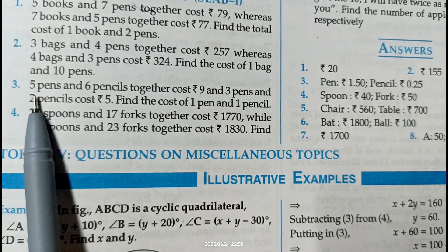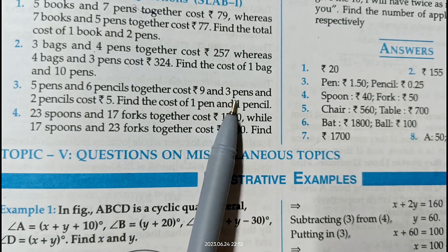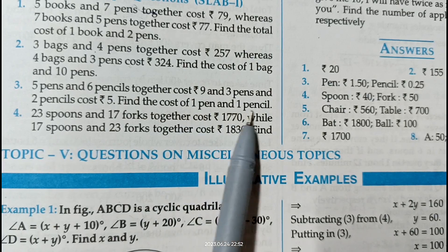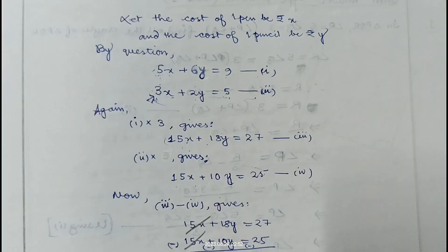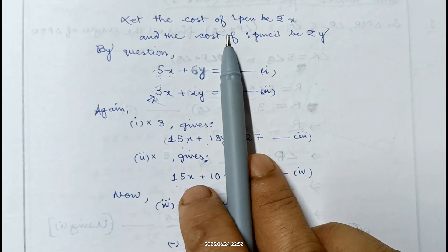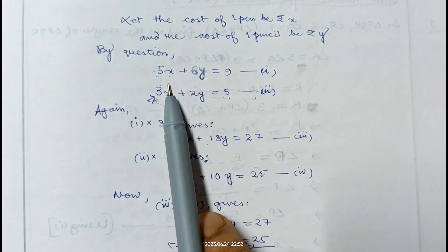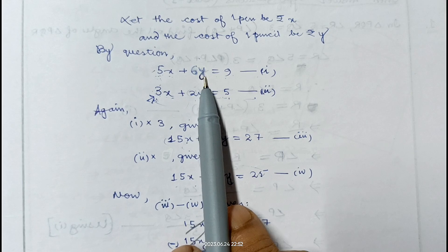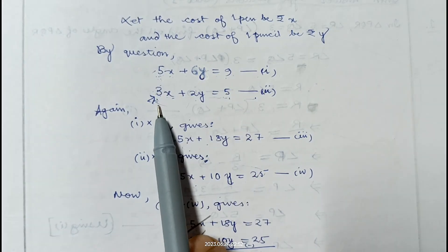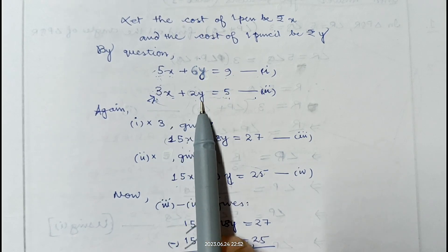In question number 3 it is given: 5 pens and 6 pencils together cost Rs. 9, and 3 pens and 2 pencils cost Rs. 5. Find the cost of 1 pen and 1 pencil. Let the cost of 1 pen be Rs. x and the cost of 1 pencil be Rs. y. So 5x plus 6y equals 9 — equation 1. And 3x plus 2y equals 5 — equation 2.